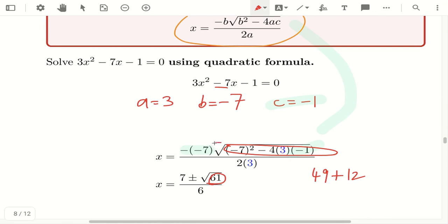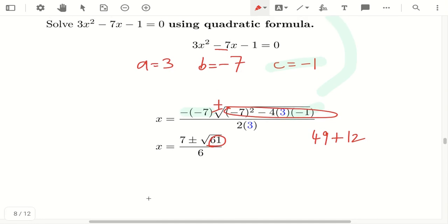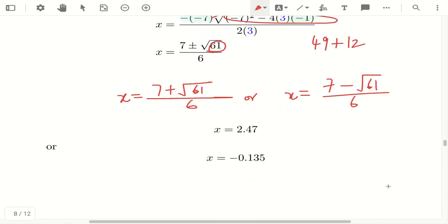Sorry, you do have plus minus here. And then 6. So you got a plus minus means that there are two answers. What we want to do is write out the two answers. So x = (7 + √61)/6 or x = (7 - √61)/6. These are the two answers.